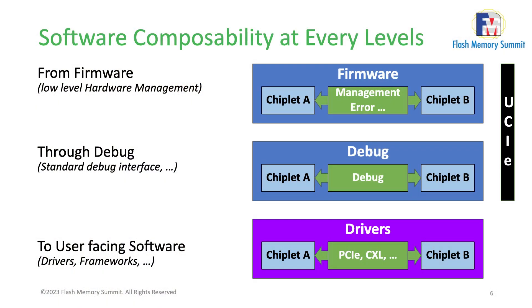The goal is standard interfaces where everyone agrees on how to communicate, bring up hardware, and manage devices. Composability works at every level. The first level is firmware — the lowest-level firmware running on the management core inside your chiplet: how you manage errors, boot, load firmware, shut down, reset, restart. These are the foundation upon which we build the specification.